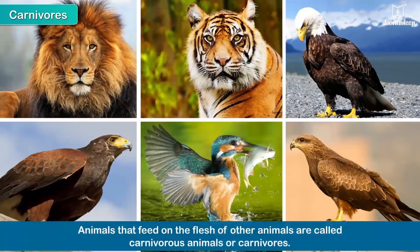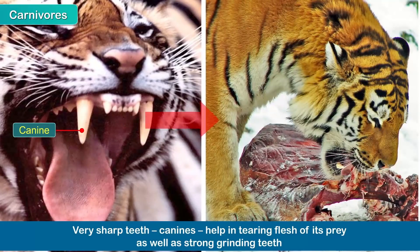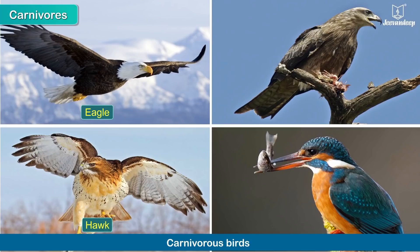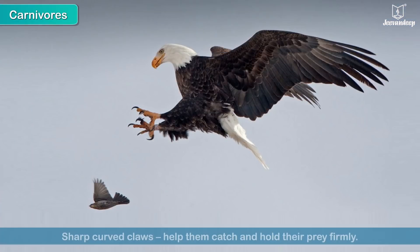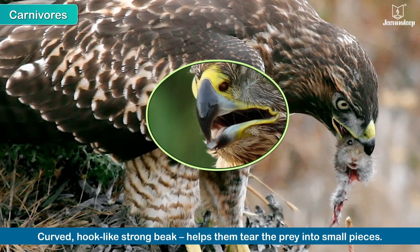Animals that feed on the flesh of other animals are called carnivorous animals or carnivores. These have very sharp teeth called canines that help in tearing the flesh of their prey, as well as strong grinding teeth. Lions and tigers are some carnivorous animals, while eagles, hawks, kites and kingfishers are some carnivorous birds. Their sharp, curved claws help them catch and hold their prey firmly. They also have a curved, hook-like strong beak which helps them tear the prey into small pieces.